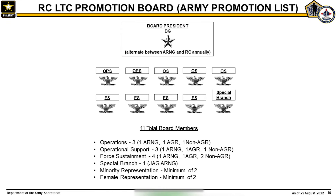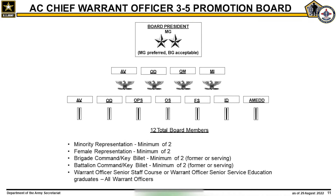This is an example of a membership composition for a Reserve Component Lieutenant Colonel Promotion Board, or the Army Promotion List. This is also an example of a Chief Warrant Officer 3 through 5 Promotion Selection Board. Preferably, a Major General will preside over the board, with four Colonels and seven Chief Warrant Officer 5 from the following branches: Aviation, Ordnance, Quartermaster, and Military Intelligence.